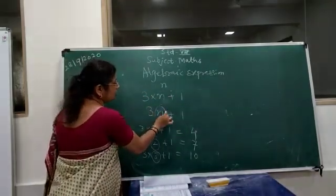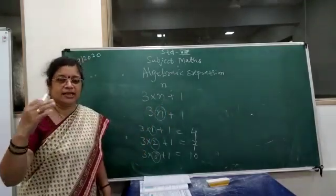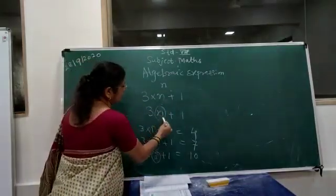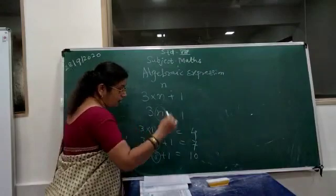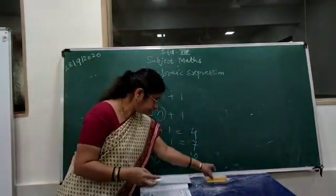Why is it called an algebraic expression? Because here alphabets — A, B, C, D, X, or anything — are used. That is what an algebraic expression is.